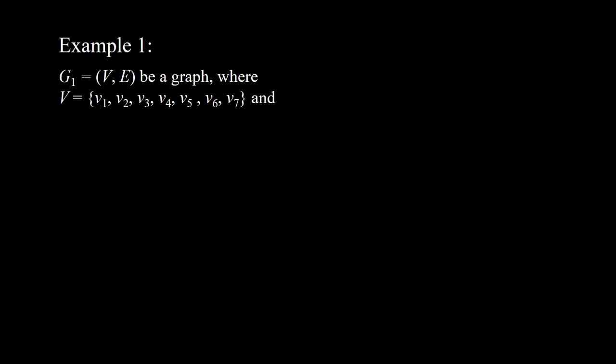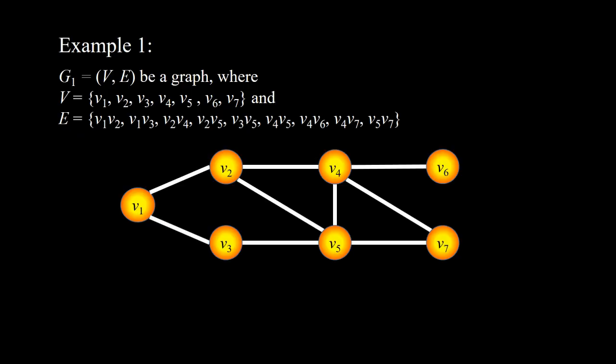Example 1. Let G1, which equals to V, E, be a graph, where V is the set of V1, V2, V3, V4, V5, V6, and V7. This is a drawing representing the graph G1. The vertices are represented by small circles, and the edges are represented by lines connecting those circles. G1 is an undirected graph.